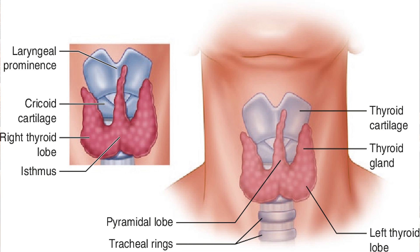The thyroid gland is a butterfly-shaped organ located in front of the neck, in front of the trachea. There is a thyroid cartilage, and the gland has two lobes — the right lobe and the left lobe — connected by an isthmus.